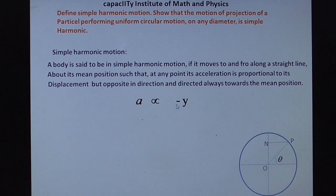A is proportional to minus y. Why we are using minus y here? Because it's in opposite direction. So remove this proportionality. We get A is equal to minus omega square y. So this we have to prove.